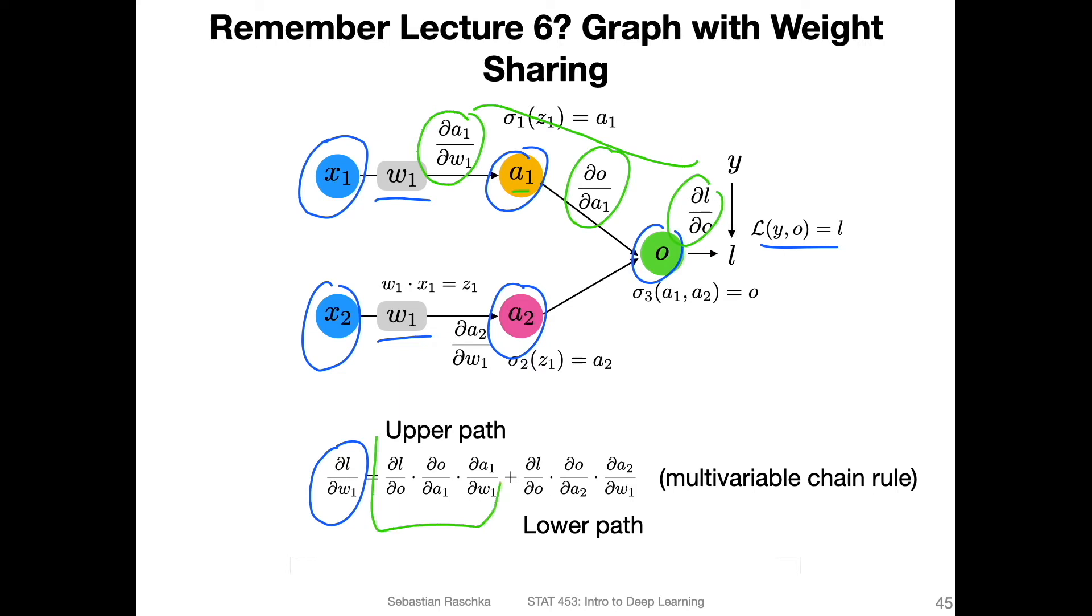This is essentially the upper path, and then we can do the same thing for the lower path. Here, we compute also the same partial derivative of the loss with respect to the output, then we compute the partial derivative of the output with respect to a2, and then the partial derivative of a2 with respect to w1. This is the lower path.